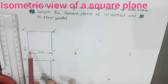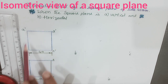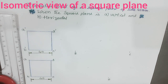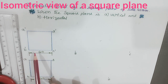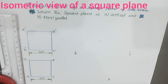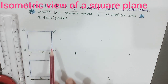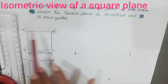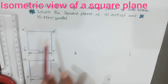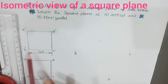This is the front view of a square plane. For this we have to draw the isometric view. First of all we have to decide what are the length lines and what are the height lines. Here, as it is a front view, B dash C dash and A dash D dash are the length lines. A dash B dash and C dash D dash are the height lines.